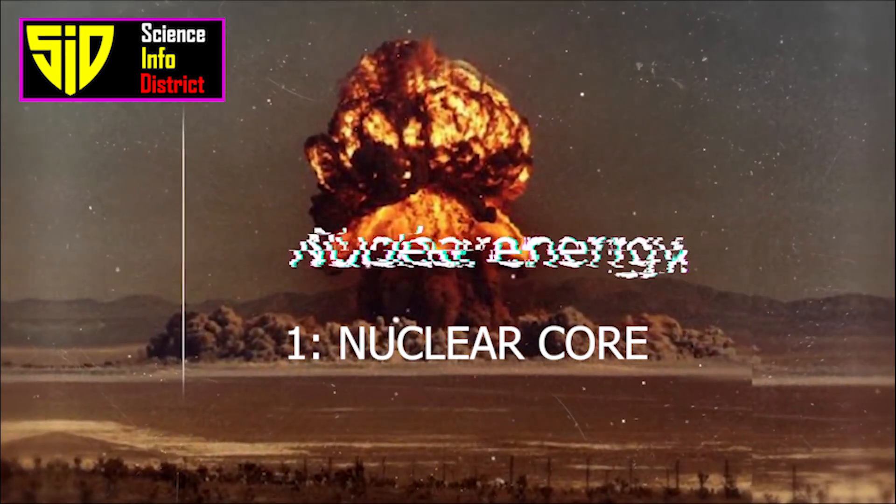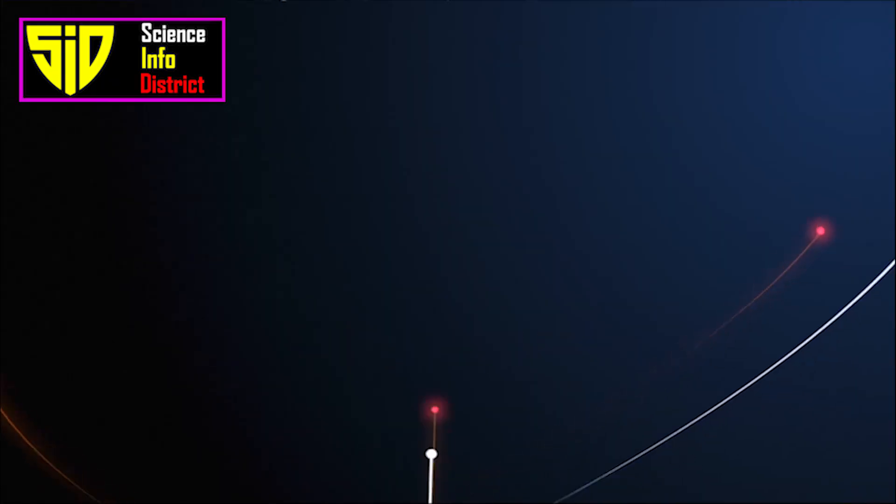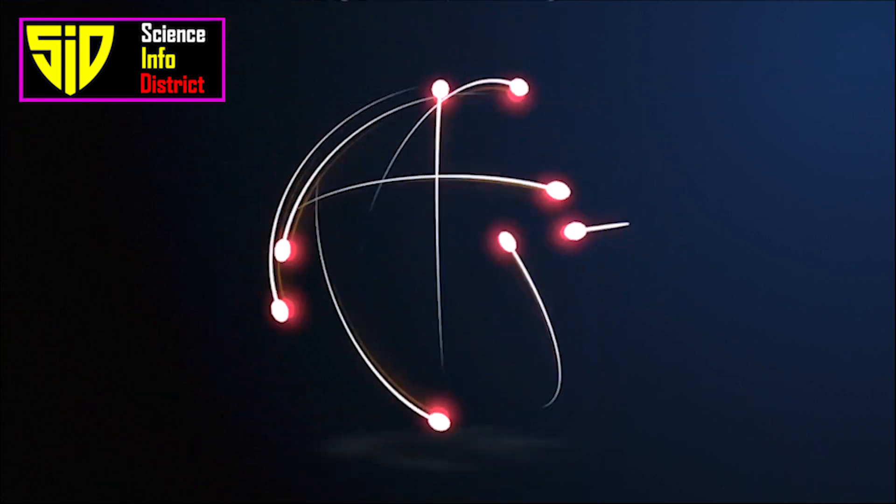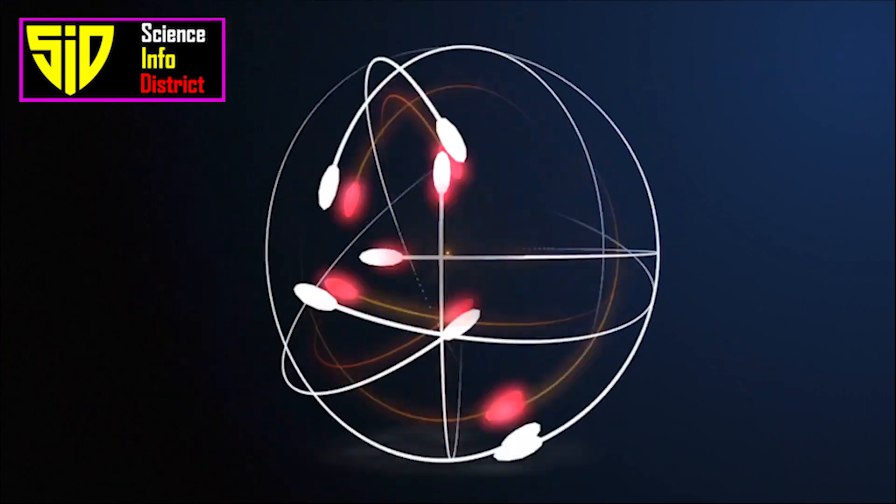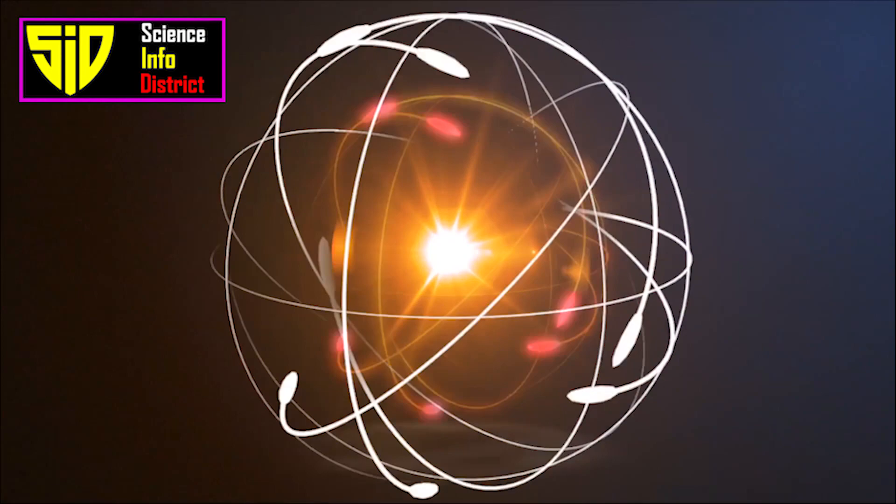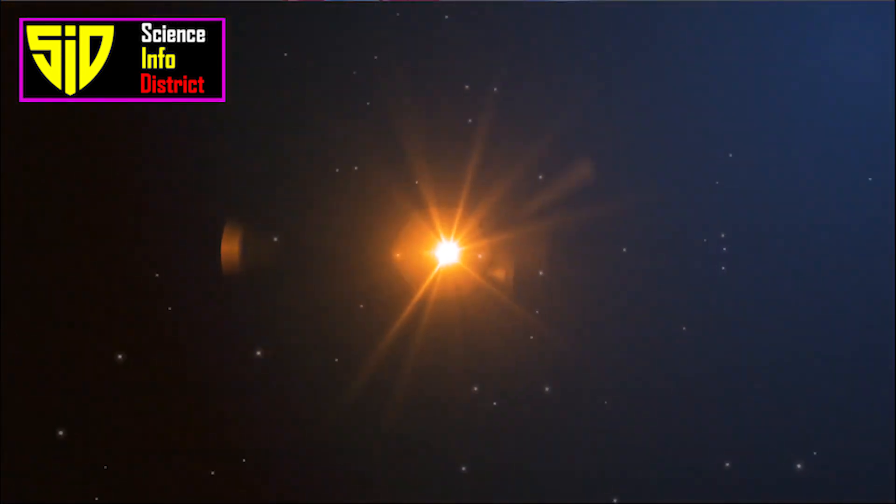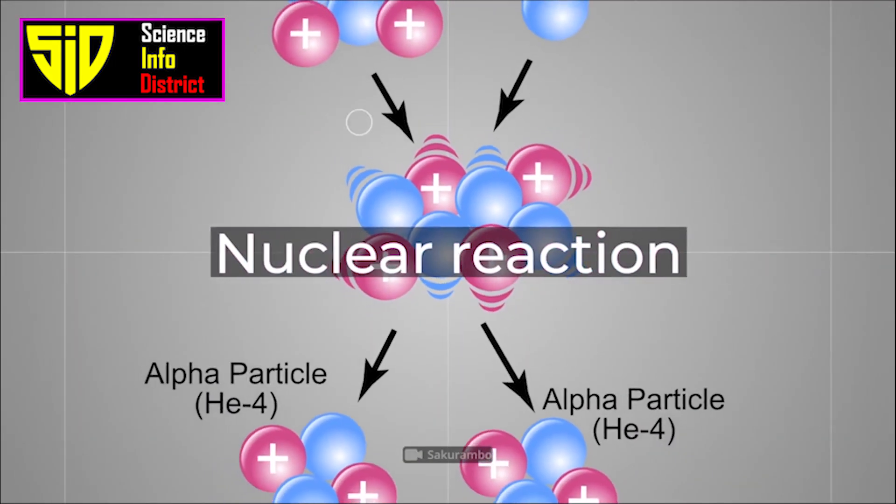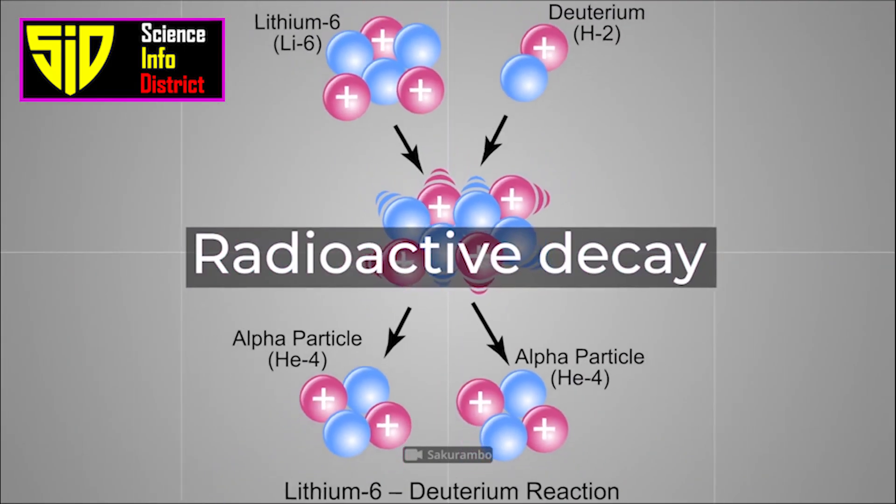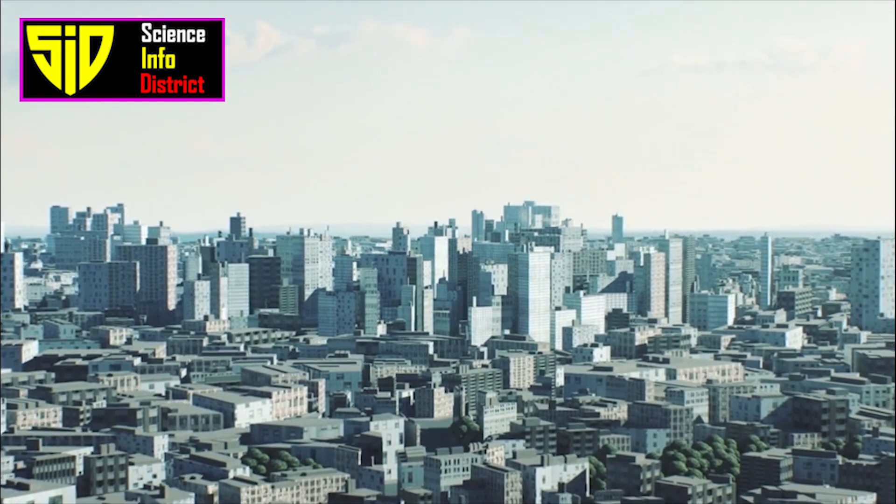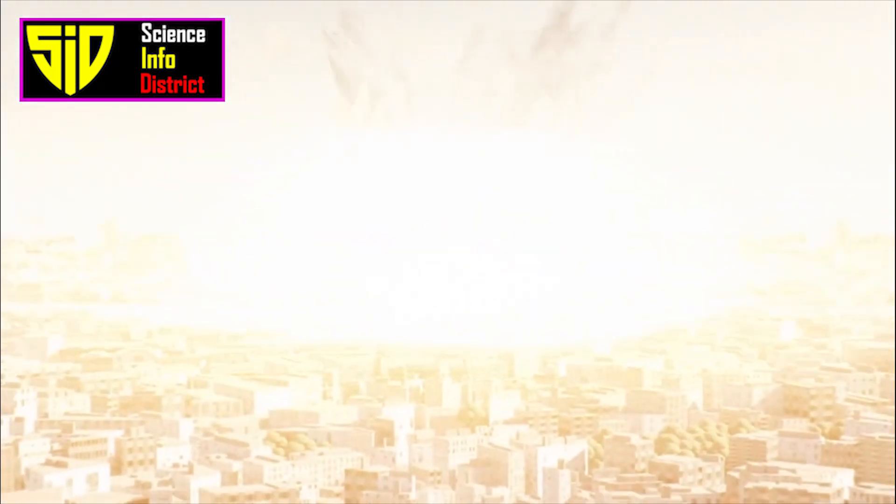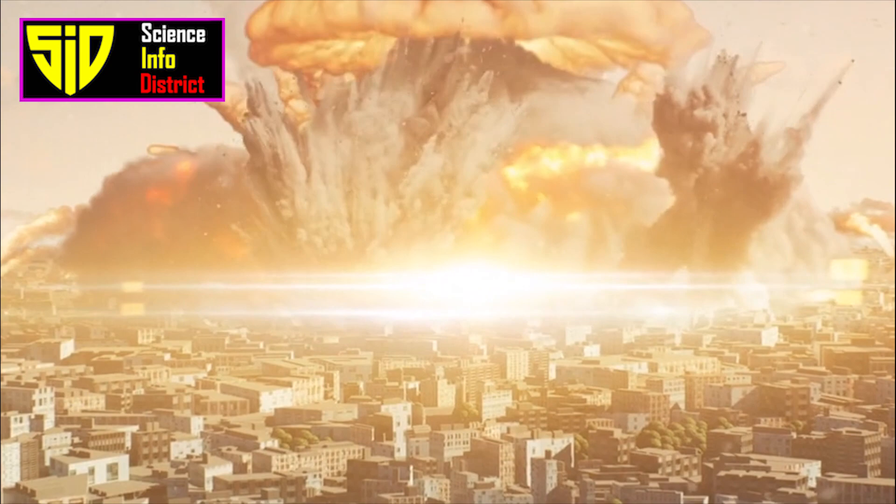Nuclear Core: The core of a nuclear bomb is typically made of either uranium or plutonium. These elements are chosen because they are capable of undergoing nuclear fission, which is the process of splitting the nuclei of atoms into smaller, more stable nuclei. This process releases a large amount of energy in the form of heat and radiation.